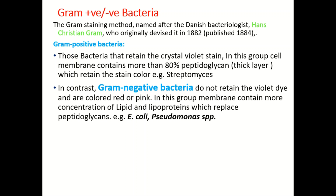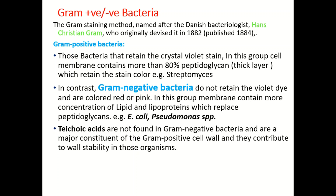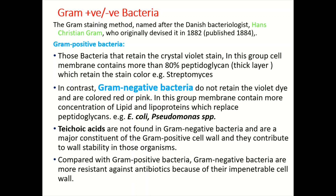Lipoproteins replace peptidoglycan, and there is a very thin layer of peptidoglycan compared to gram positive bacteria. Serratia and Pseudomonas are examples of gram negative bacteria. Furthermore, teichoic acids are not found in gram negative bacteria; they are a major constituent of the gram positive cell wall and contribute to wall stability.